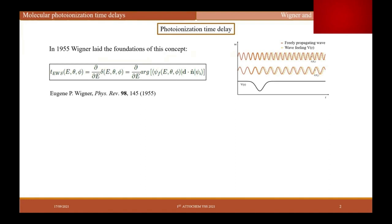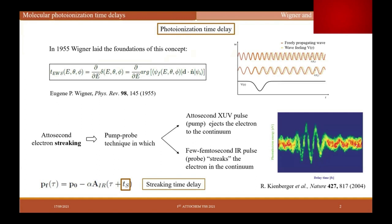Wigner laid the foundations of this concept in 1955, defining it as the derivative of the scattering phase with respect to the electron energy — how much delay an electron experiences in a short-range potential relative to a free electron. However, this quantity cannot be retrieved directly from an experiment, so different strategies have been proposed. Among them, the streaking technique has provided successful results. Attosecond electron streaking is a pump-probe technique where an attosecond UV pulse ejects an electron to the continuum and a few-femtosecond IR pulse streaks or modifies the momentum of the electron. The accumulated momentum gives information about the time delay.